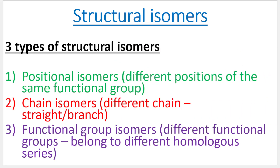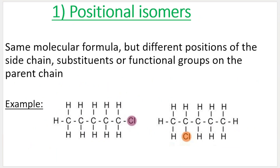What I like about the different types of structural isomers is the name explains what it is. Positional isomers: they have the same molecular formula but different positions of the side chain, substituent — basically your branch — or functional group on the parent chain.